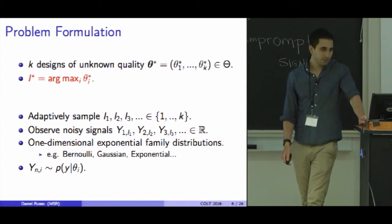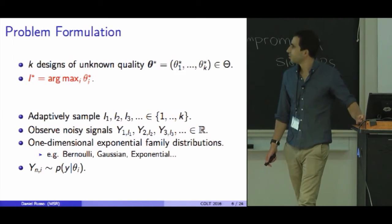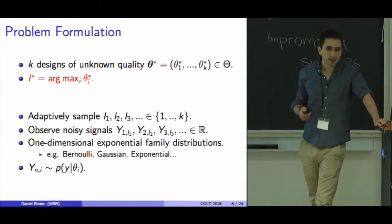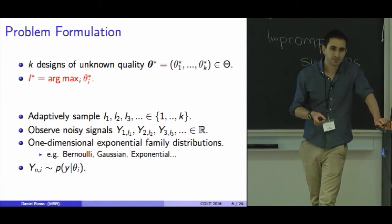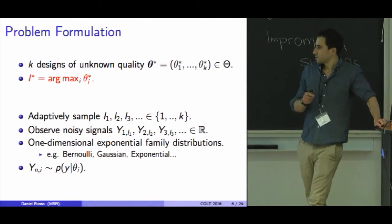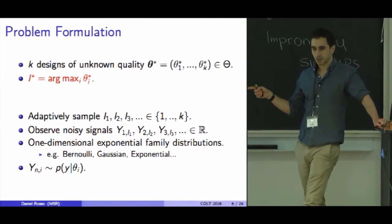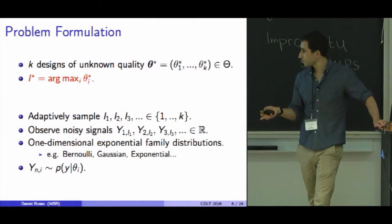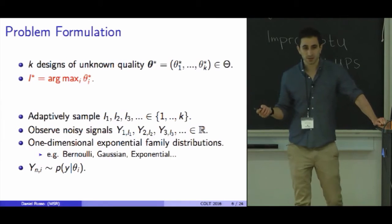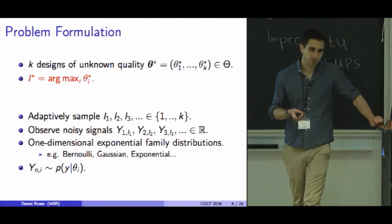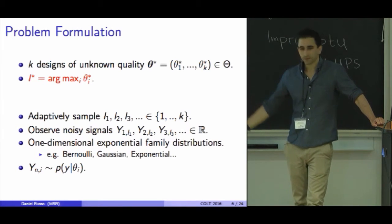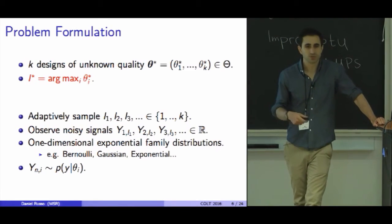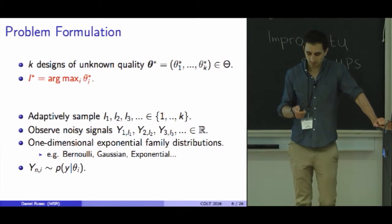In math, let's think about the following problem. We have these k designs, and they have an unknown quality, each of them, encoded by this vector θ*. What we'd like to do is identify i*, which is the unique argmax of this vector—it's the design with the highest quality. Our decision maker is going to adaptively sample designs, and they're going to observe noisy, real-valued signals of the quality of the underlying designs they sample. For this talk, I'll assume that the measurement distributions are in the one-dimensional exponential family. The signal we get for design i is drawn iid from a distribution that depends on the parameter θ_i, and that's something like a Bernoulli distribution or a Gaussian distribution.